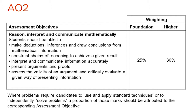AO2 is a new assessment objective that covers reasoning, interpreting and communicating mathematically — this is different to AO2 in the current GCSE. In AO2, students should be able to make deductions, inferences and draw conclusions from mathematical information, construct chains of reasoning to achieve a given result, interpret and communicate information accurately, present arguments and proofs, and assess the validity of an argument and critically evaluate a given way of presenting information. At foundation tier the weighting for AO2 is 25%; at higher tier it is 30%.